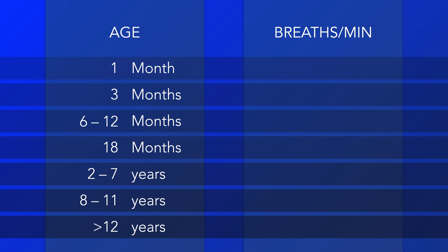If the value measured is lower than the reference range for age, then the patient has bradypnea. If it is above the reference range, then tachypnea. The parameters provided here are based on the APLS values and represent breathing rates between the 5th to the 95th percentile of babies and children while at rest.